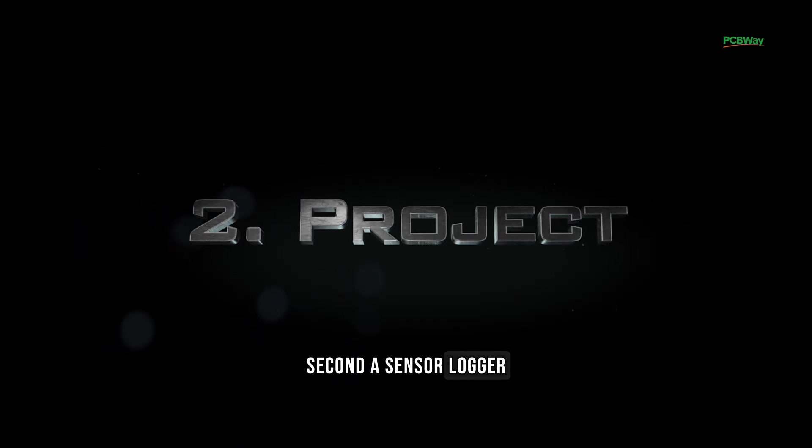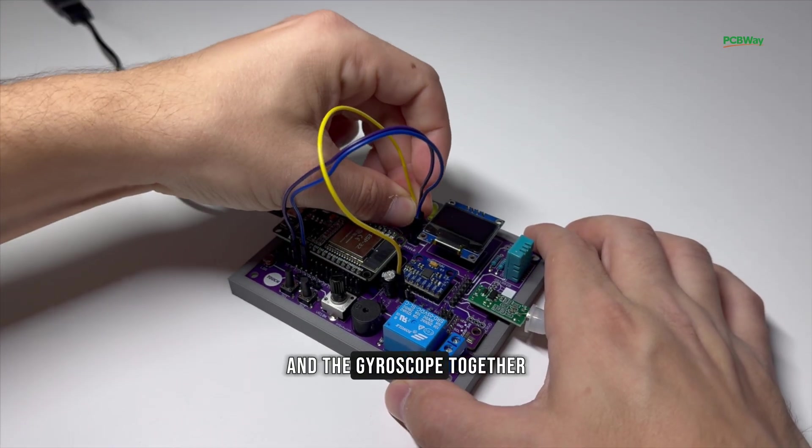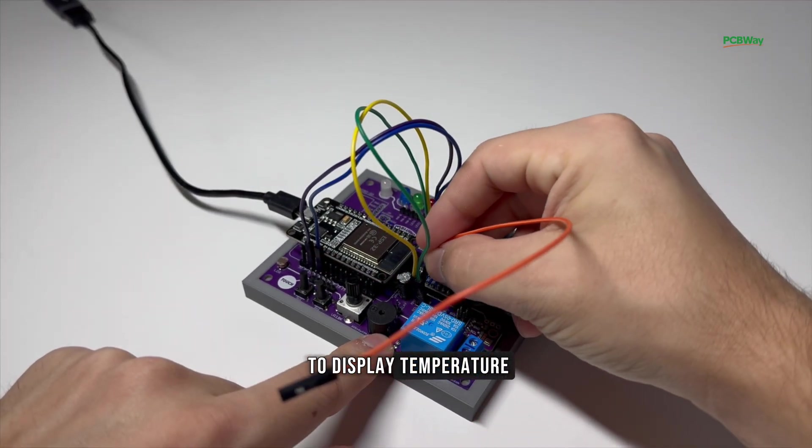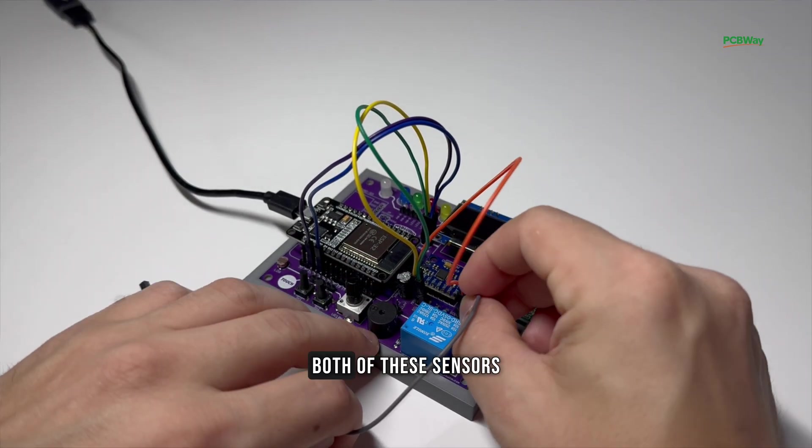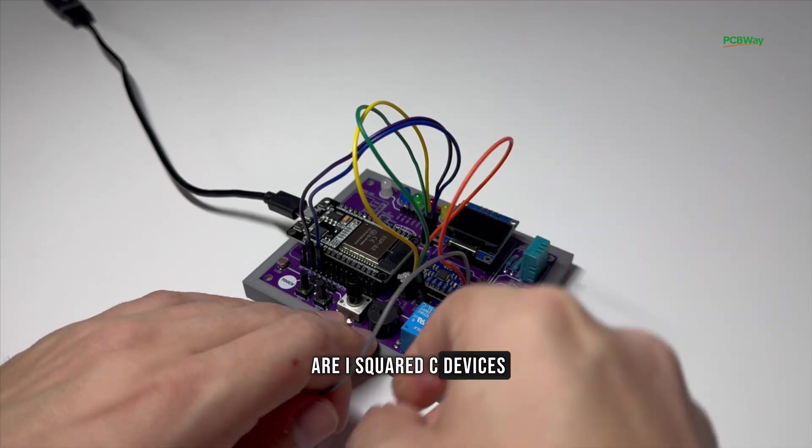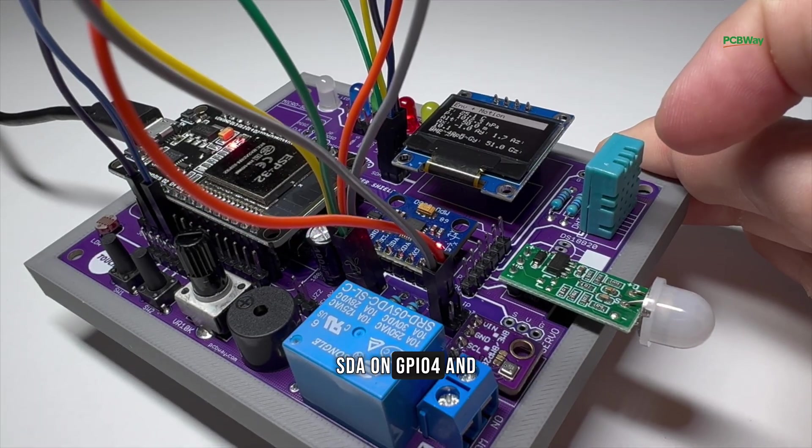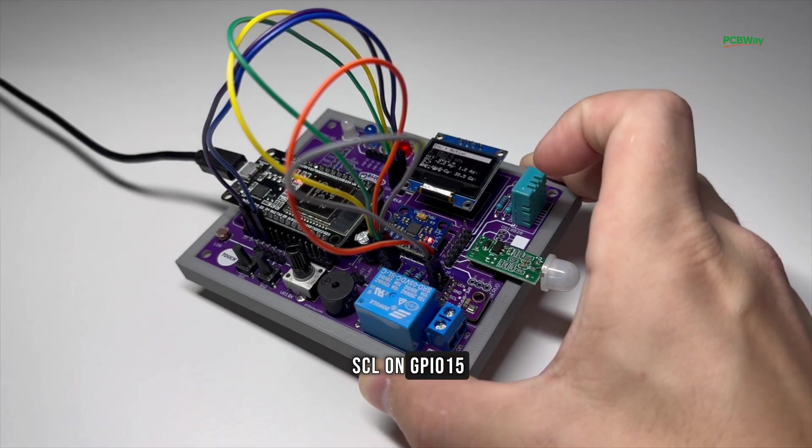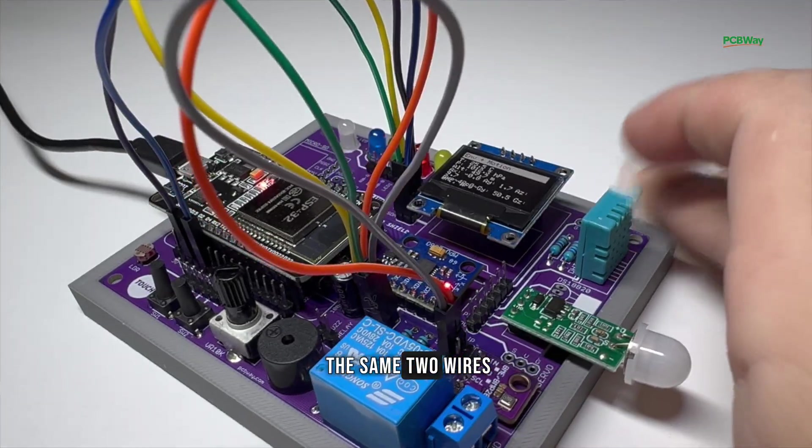Second, a sensor logger. You use the BMP280 and the gyroscope together to display temperature, pressure, altitude, and motion data on the OLED in real time. Both of these sensors are I2C devices, so you only need two jumpers, SDA on GPIO4 and SCL on GPIO15. The OLED is also on the same I2C bus, so they all share the same two wires.